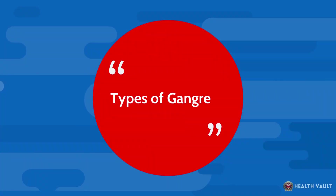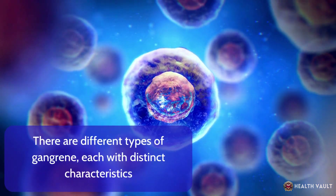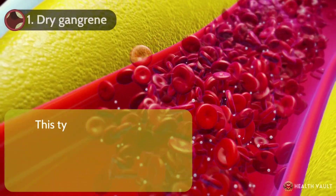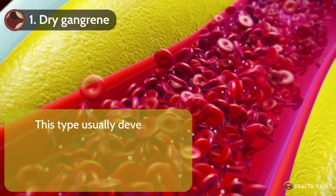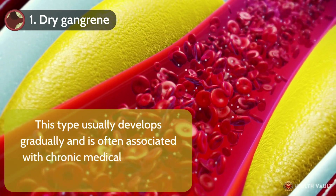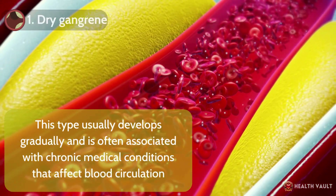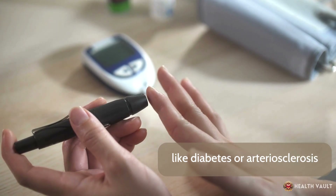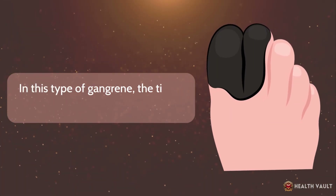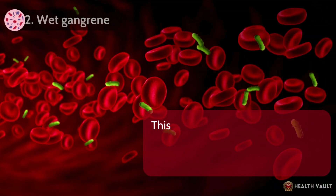There are different types of gangrene, each with distinct characteristics. The first is dry gangrene. This type usually develops gradually and is often associated with chronic medical conditions that affect blood circulation, like diabetes or arteriosclerosis. In this type of gangrene, the tissue becomes dry, shriveled, and black.